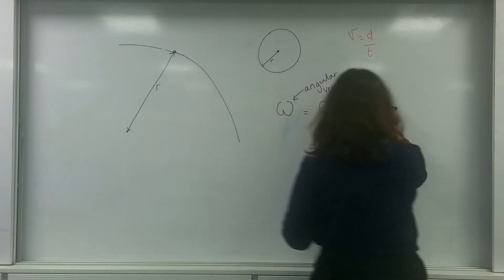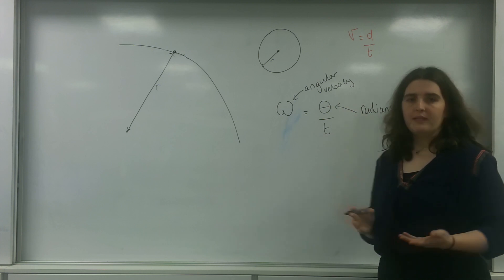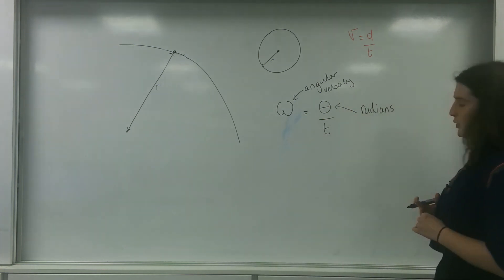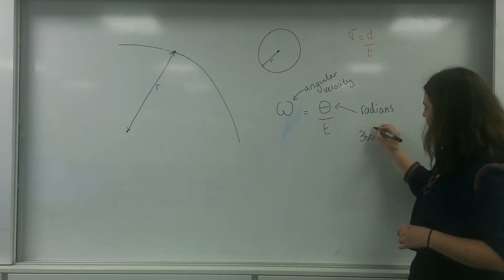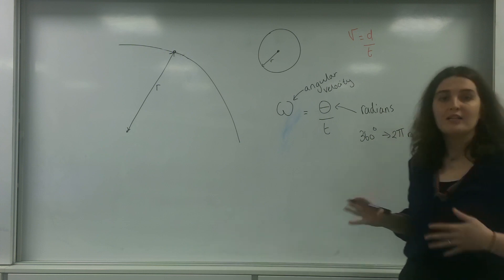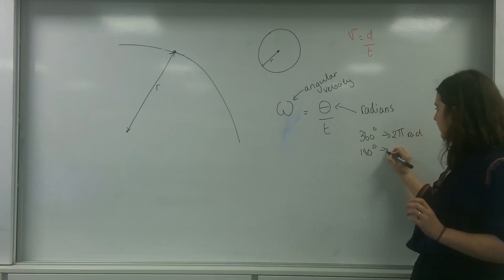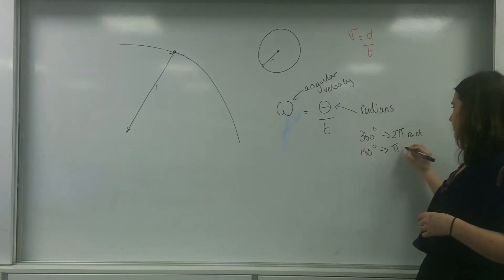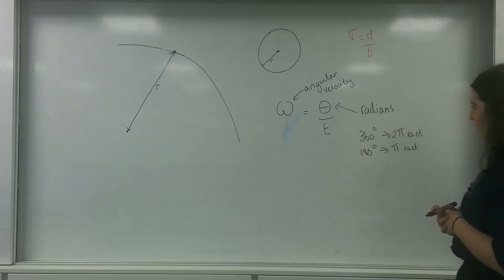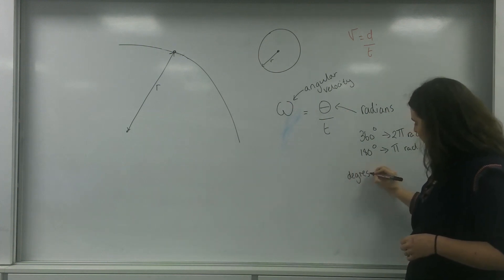This angle is normally expressed in radians. Just to make you aware: in 360 degrees there are 2π radians, and in 180 degrees there is π radians. You can keep going on from there. So let me show you how to convert between degrees and radians.